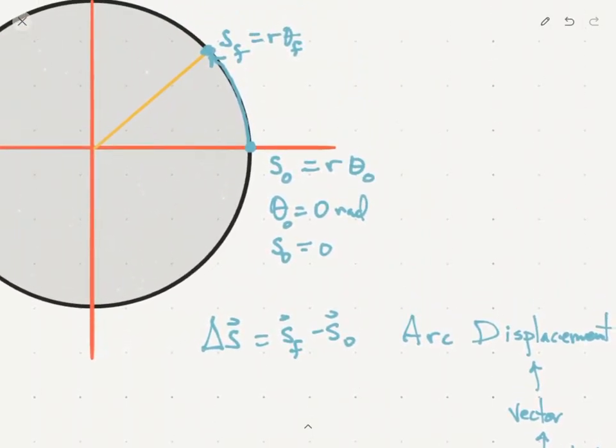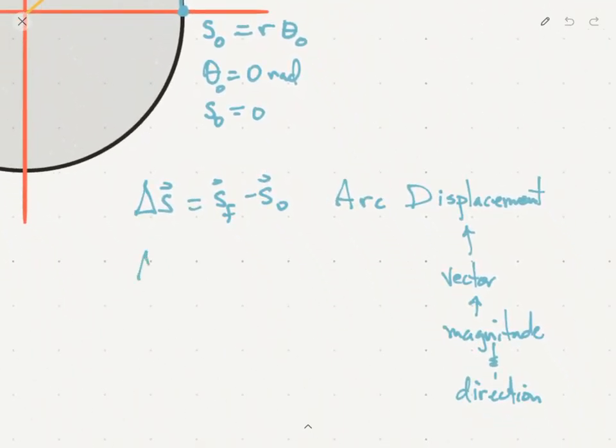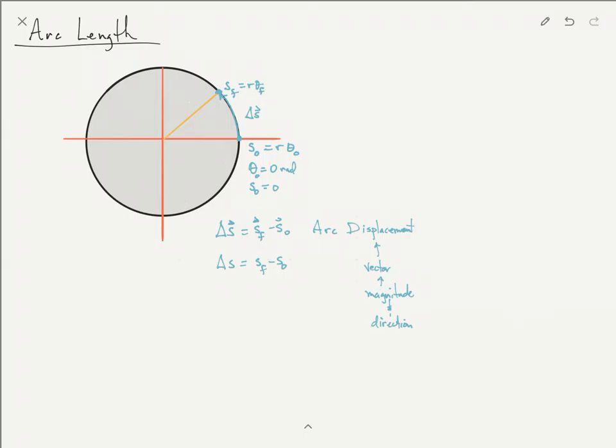Okay. So we have delta S here, going from one location to the other location. Now, if we want to define arc length, we would just leave that little thing on the top off, and we would just have S_F minus S_naught. That's what you're going to see most of the time, especially when you get into the curve.